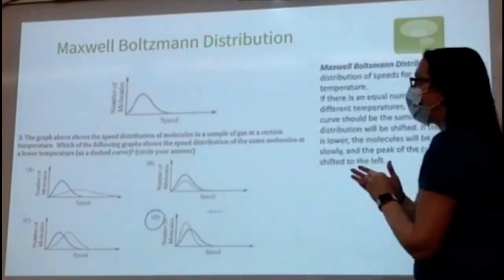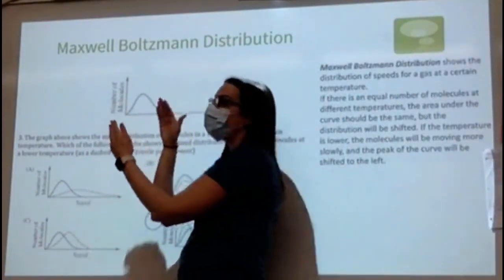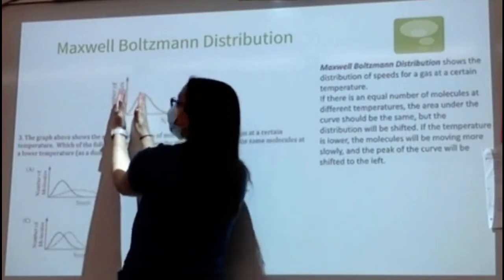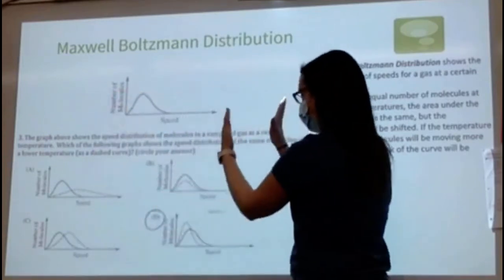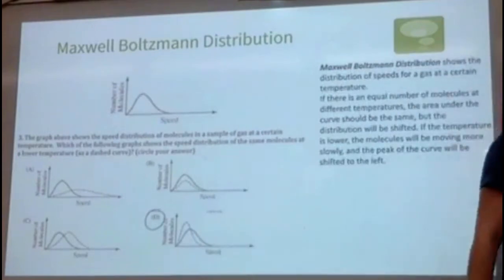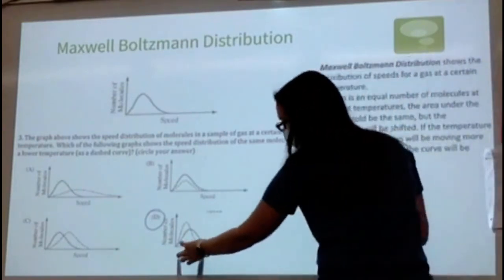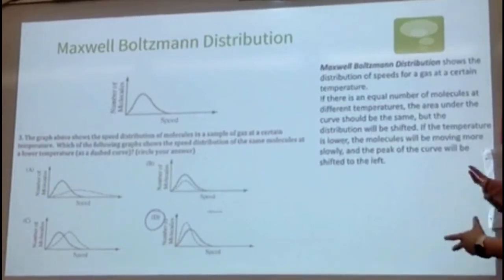If we lower the temperature, molecules slow down. So the graph should shift to the left on the x-axis. Since the number of molecules is unchanged, the area under the curve stays the same — we just squish the graph. That shifts the peak of the curve to the left. Answer D is correct: same area under the curve, but distribution shifted left.